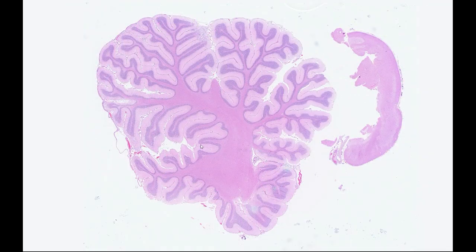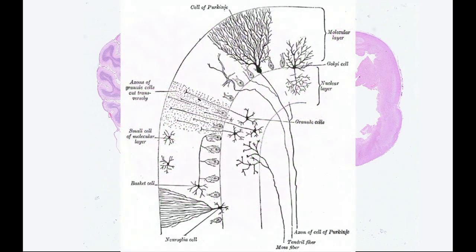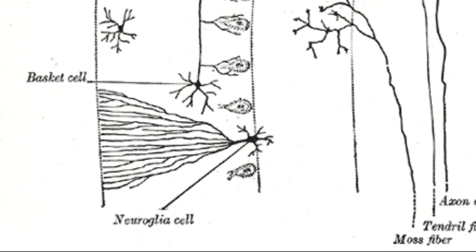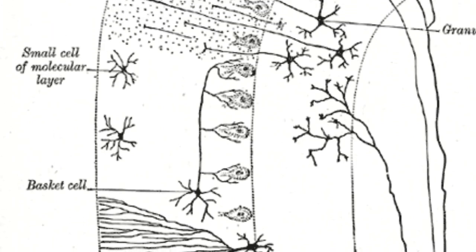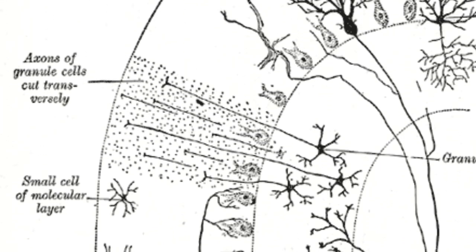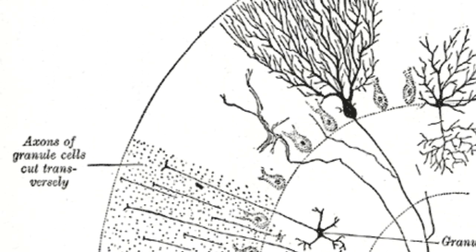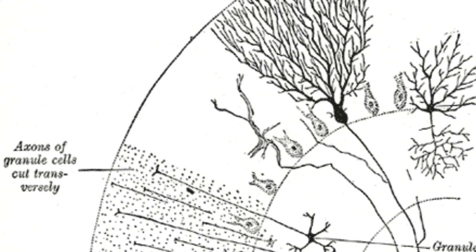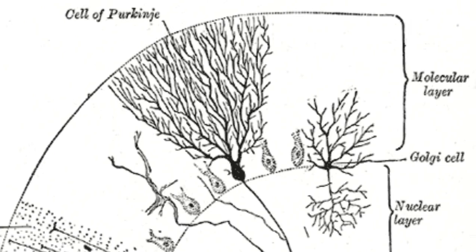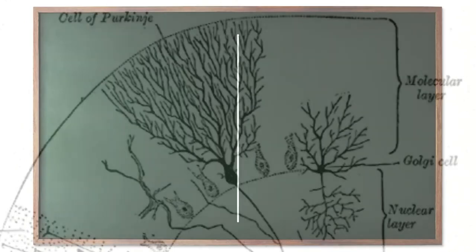Before we get into the weeds on the cells in the cerebellum, it's worth looking at a schematic. Basically, cerebellar histology is all about the neurons and interneurons, interneurons being the cells that enable communication between neurons. The thing you'll probably need to learn is which neurons are where and where they're sending their axons and dendrites to.